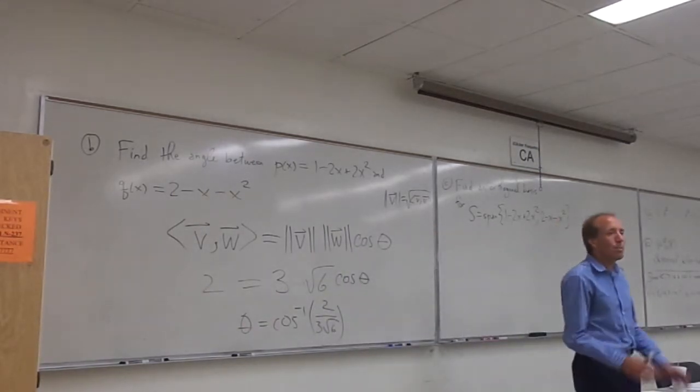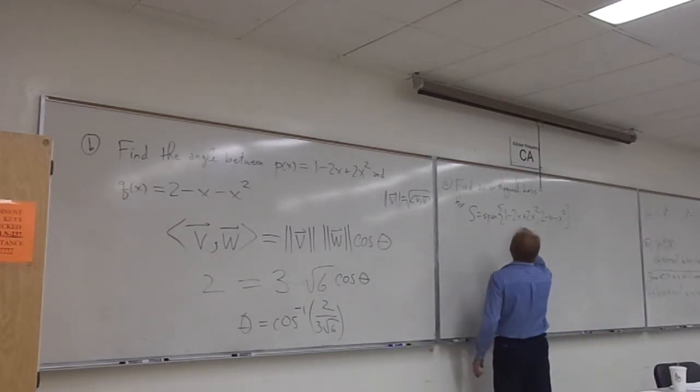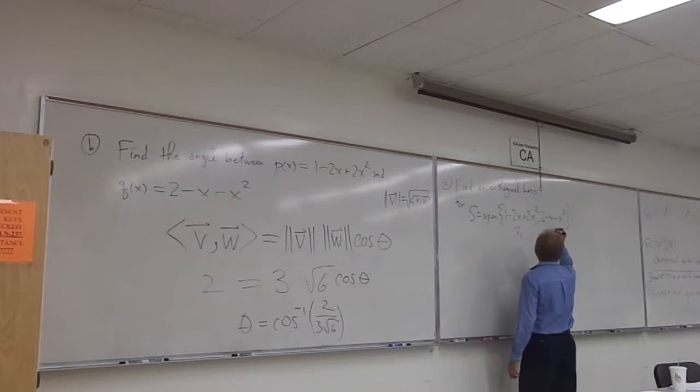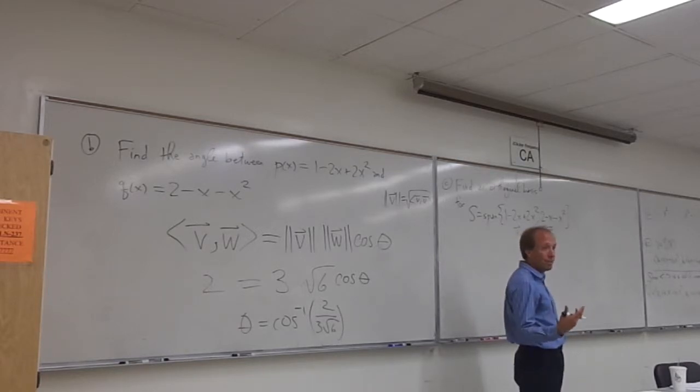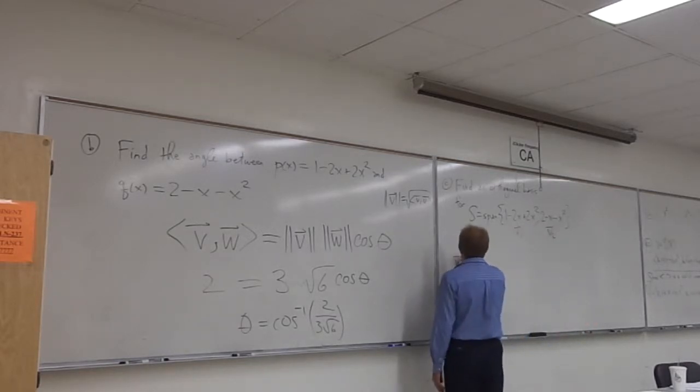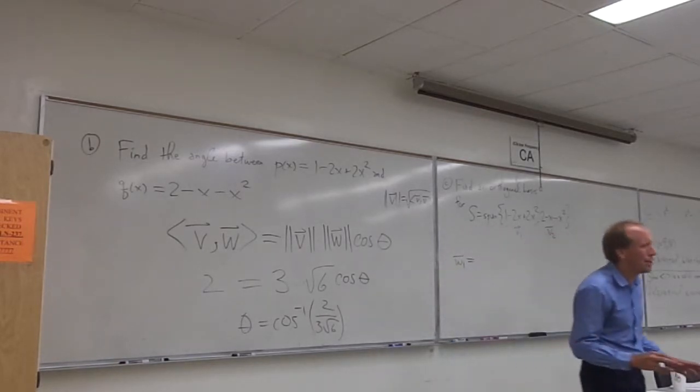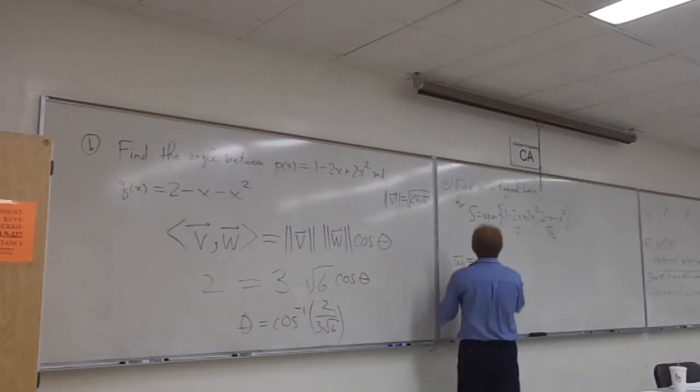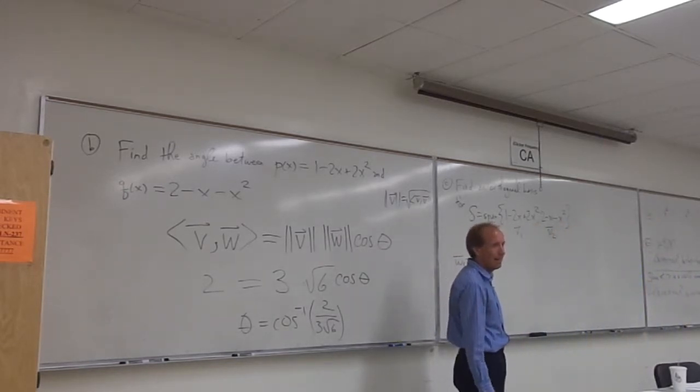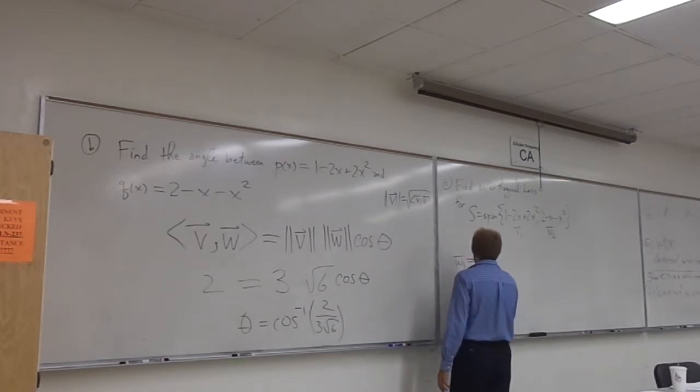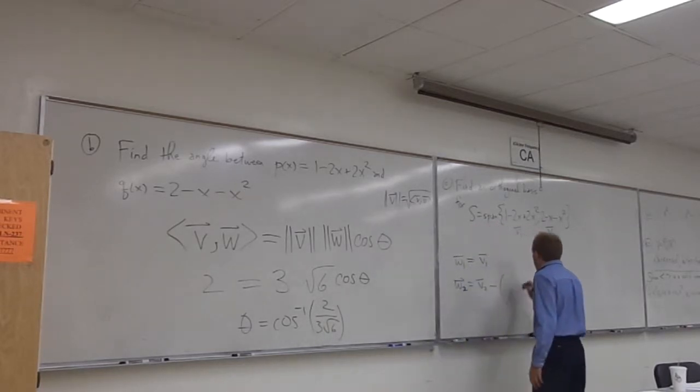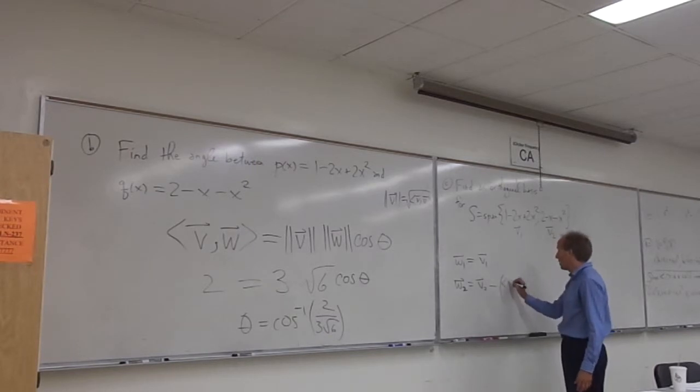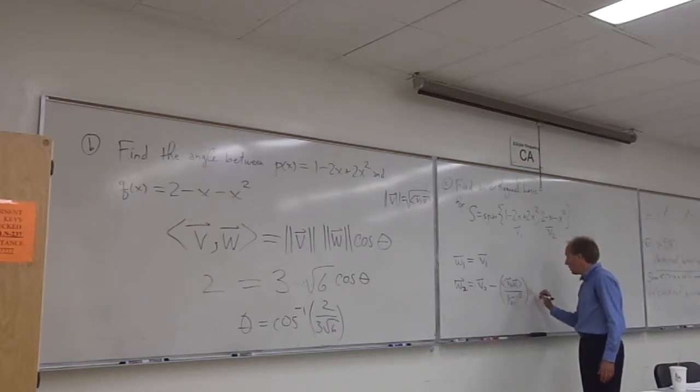So what we need to do is the Gram-Schmidt process. Essentially, what we do is we start off, these are the vectors V1 and V2. Okay, and then the Gram-Schmidt formulas I'm going to give you, you don't have to stress out, but W1 is not the same Ws that we were just learning about in Chapter 7. W1 is just V1. Okay, and then W2 is just V2 minus the projection of V2 along W1, and the formula for that, which you don't need to know, is the inner product of V2 with W1 divided by the norm of W1 squared times W1.